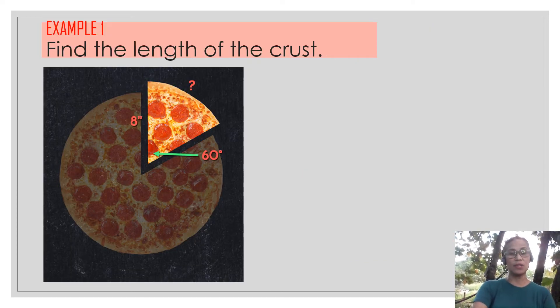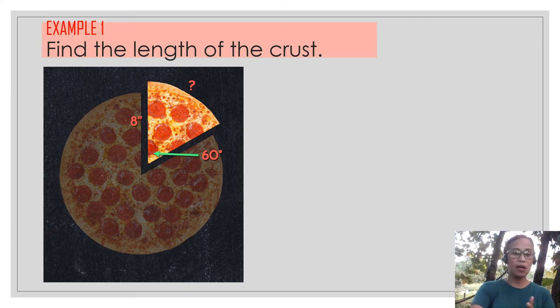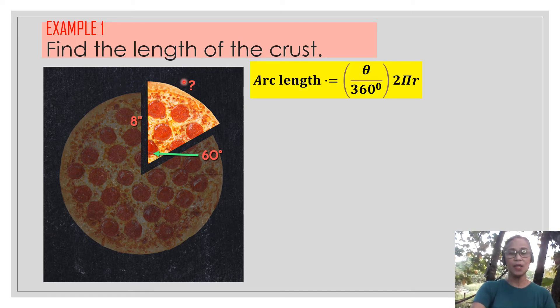Moving on, let us have this example so that we can verify which formula are we going to use. Find the length of the crust, given a central angle here of 60 degrees, and a radius is 8 inches, and you're being asked about the length of this crust. Are we going to use your circumference formula or the arc length formula? Obviously, since this is just a part, we are going to use the arc length formula.